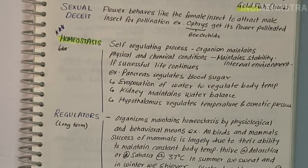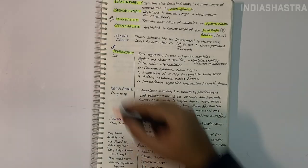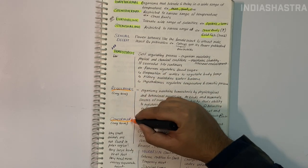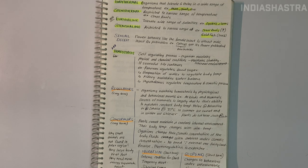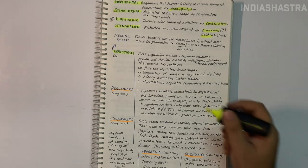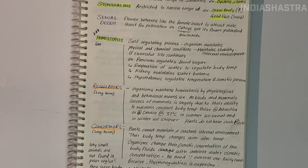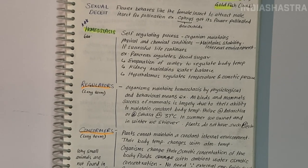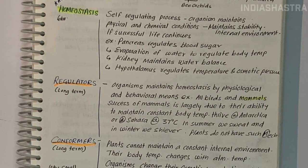Depending on responses to abiotic factors, we find two types of organisms: regulators and conformers. Regulators maintain homeostasis by ensuring constant body temperature (thermoregulation) and constant osmotic concentration (osmoregulation). For example, mammals regulate temperature by shivering in cold and sweating in heat. Humans live in both polar regions and the tropical deserts of Sahara because they can maintain a constant body temperature.